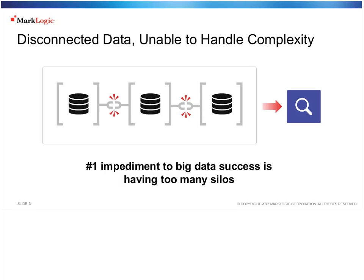If the IT department doesn't deliver, they'll just go set up their own system to keep up with competitors, and we start to see the problem of shadow IT popping up in organizations. Pretty soon the organization is dealing with dozens if not hundreds of different data silos — it starts to look sort of like Baskin-Robbins with its 31 flavors. There's a database for every type of data and purpose, and it's difficult to manage and get value from it all.